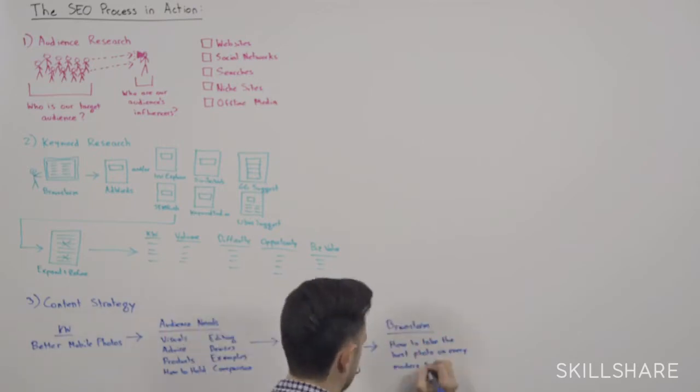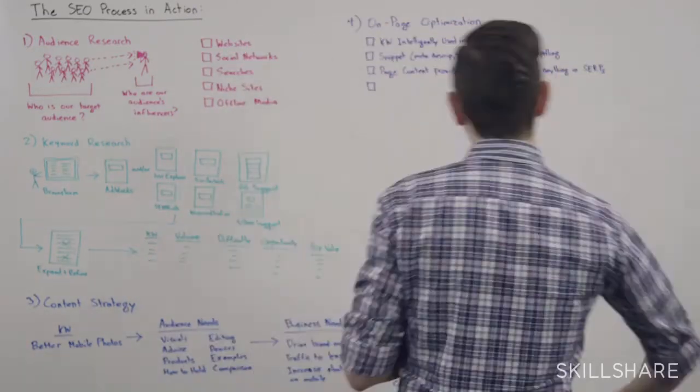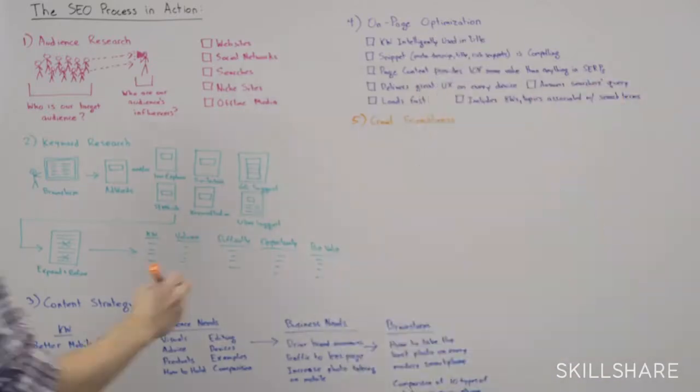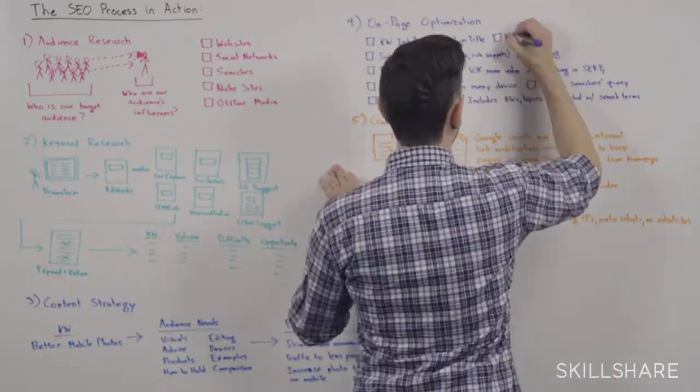Some good prerequisites for this class are basic understandings of how the web works. If you know a tiny bit of HTML, that's going to be helpful as well, but I'm not going to assume too much knowledge, so if you take it end to end, you should get a solid understanding of SEO from front to back. With that, we're going to kick off with an overview of SEO and then dive into some tactics.